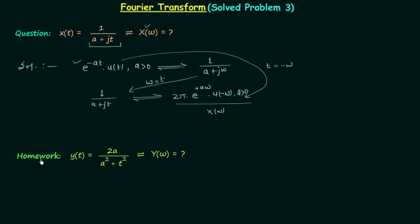In this homework problem, there is time domain signal y(t) and it is equal to 2a divided by a² plus t². You need to find the Fourier transform Y(ω). Again you need to use the duality property, and for that you have to think about some Fourier transform which is similar to this time domain signal. So try to solve this question and once you have your answer, post it in the comment section.